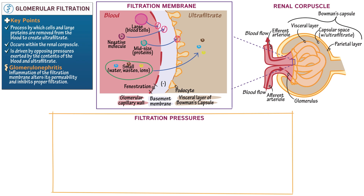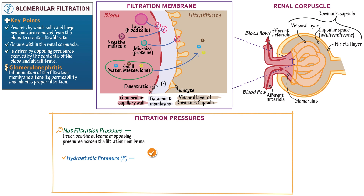Now let's learn how pressures exerted by the blood and ultrafiltrate determine whether filtration will occur. First write that the net filtration pressure describes the outcome of opposing pressures, also referred to as forces, across the filtration membrane. Then define the pressures, also referred to as Starling forces. Hydrostatic pressures (P) are the forces that blood and ultrafiltrate exert on the filtration membrane — they push things against it.